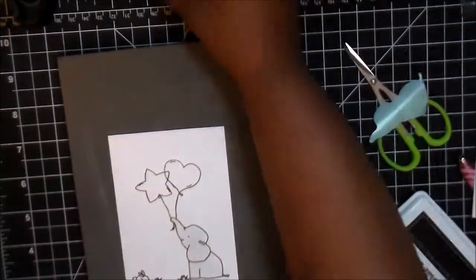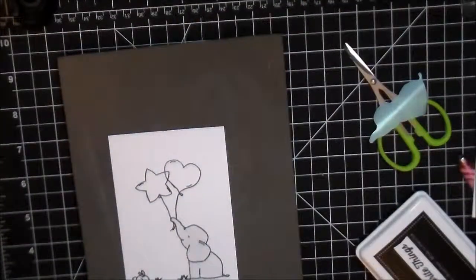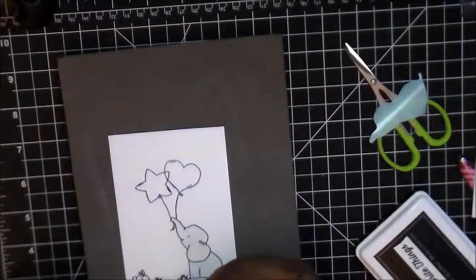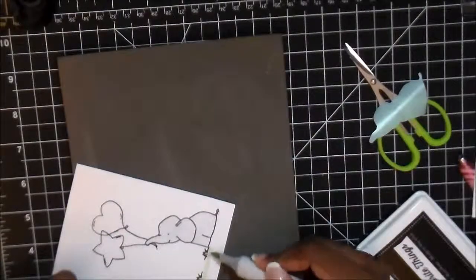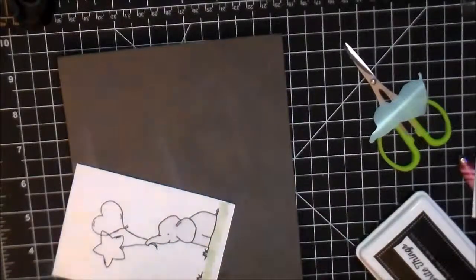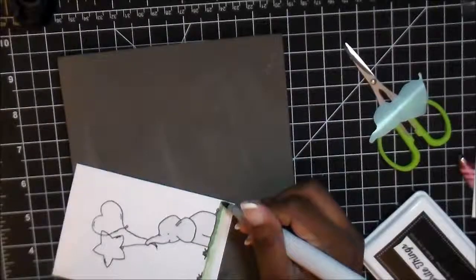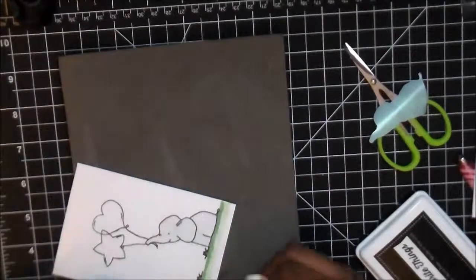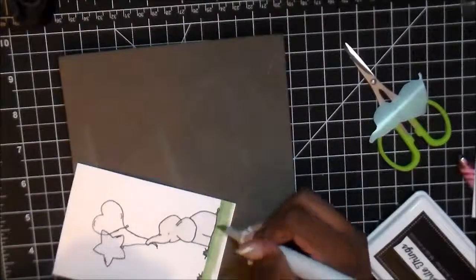So after I've stamped the grass and the bunny again I'm gonna go ahead and start coloring the grass in two shades of green and I believe I used the YG45 and the YG61 on this one.